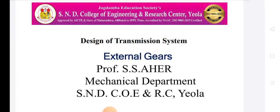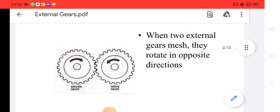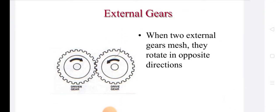The gear drive consists of two wheels. The small wheel is called as pinion and the larger wheel is called as gear. When two external gears are meshed they rotate in opposite direction.